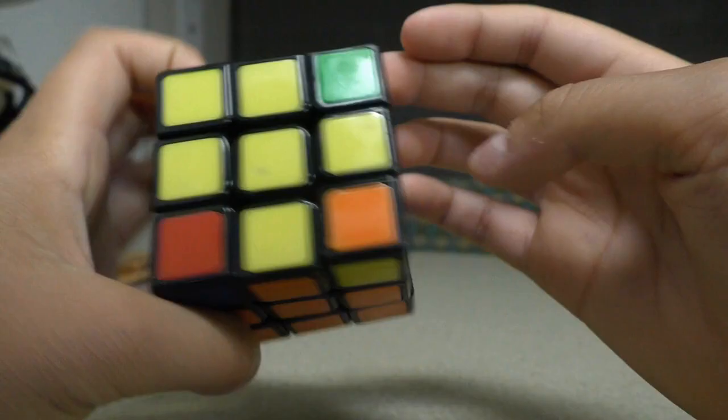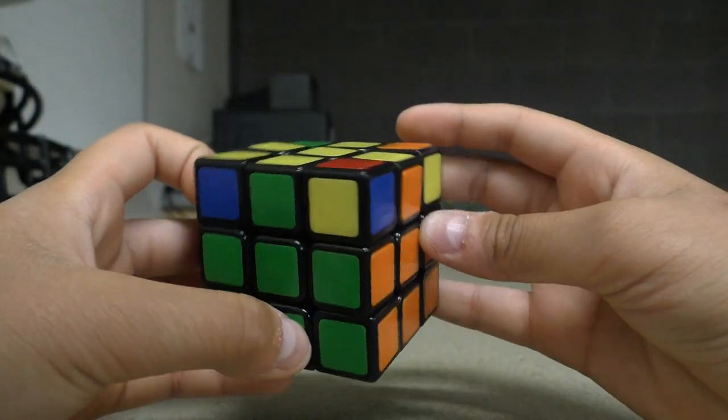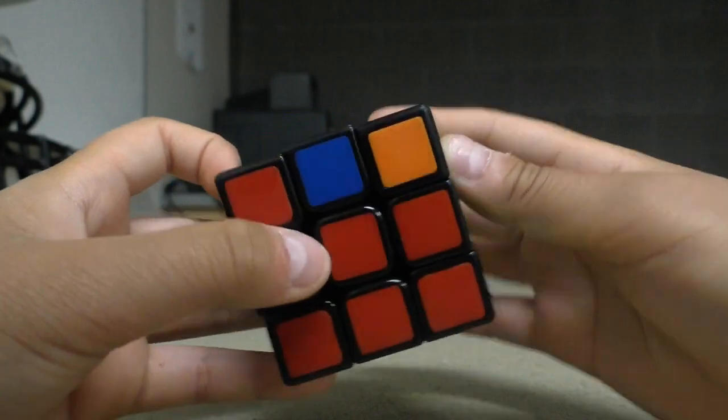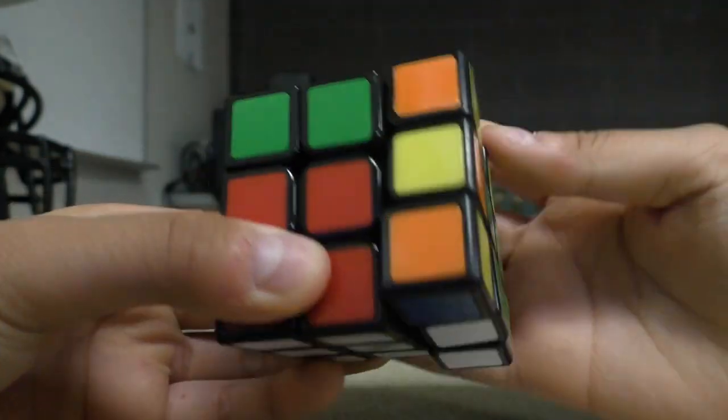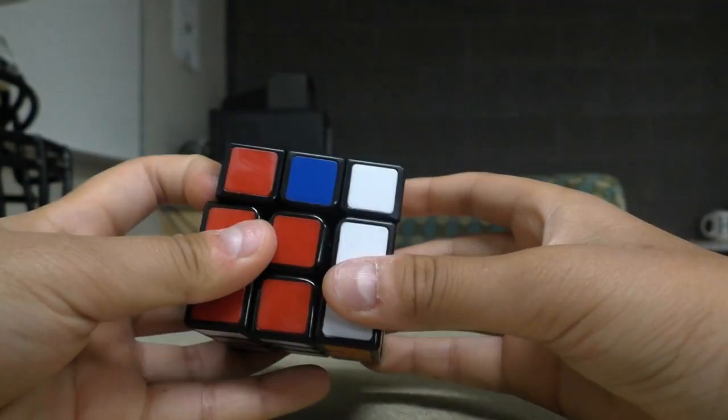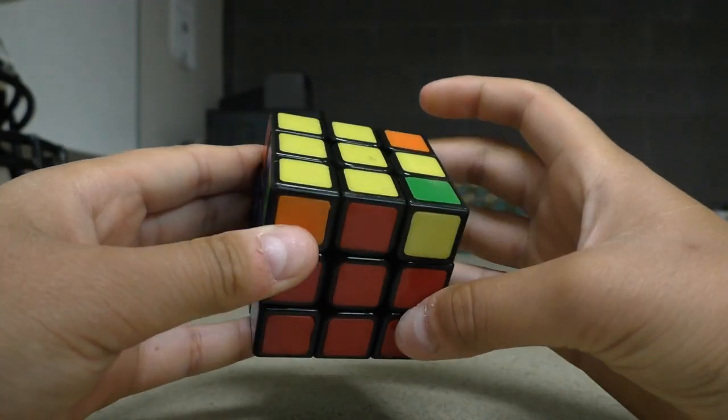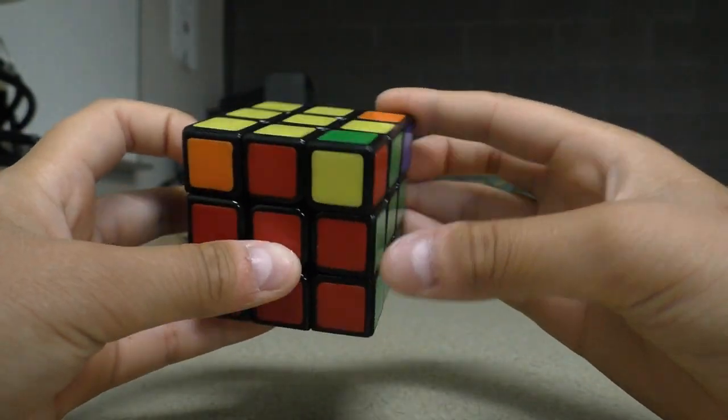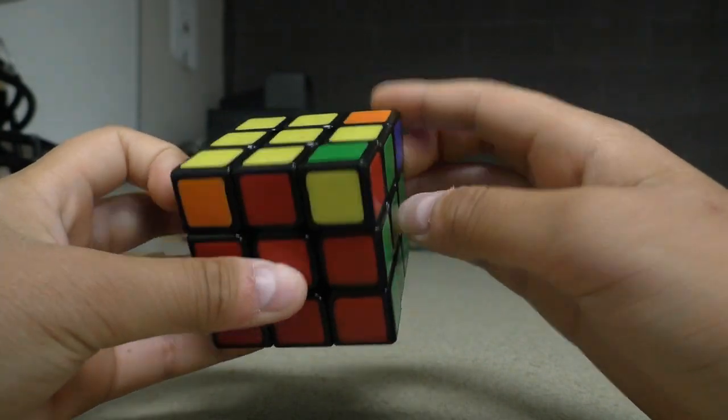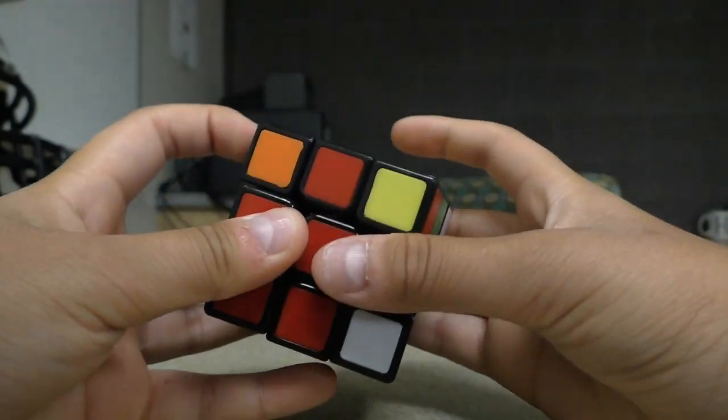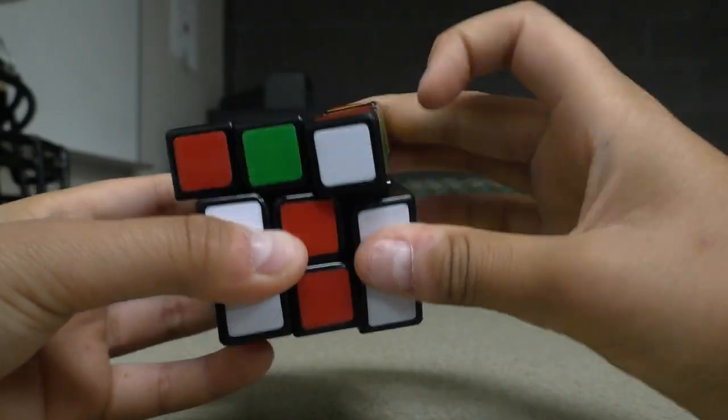The next step you're going to do is you're going to solve these top layers. If you have two that are already matching, that's perfect. Just put one to the back and one to the right. And then solve this pattern. Now we're going to work on the yellow corners. This one is already matched because it has green and red, which is already in the middle green and red.